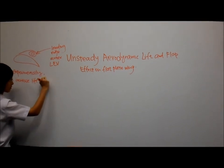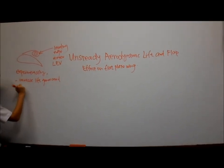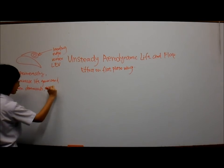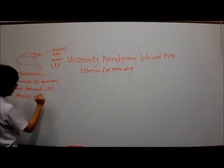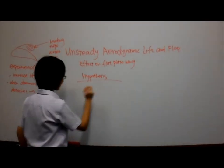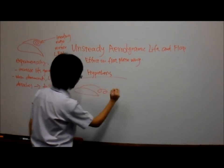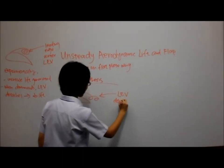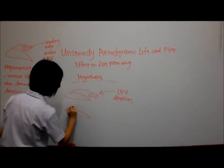However, these vortices would detach from the wing when it sheds downstream. This is accompanied by decreased lift. The initial hypothesis was that the detachment of the vortices can be delayed with the flap, leading to greater lift generation, hence improving the efficiency of the wing.